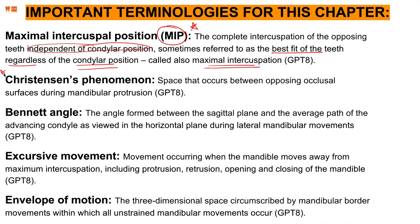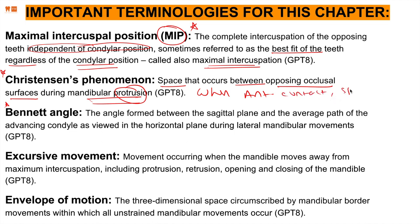Christensen's phenomena — very, very important. Christensen's phenomena is the space that occurs between opposing occlusal surfaces during mandibular protrusion. When the anteriors are protruding and contacting, there is a space created on the posterior teeth. All it means is that when the mandible moves forward and the anteriors contact, there is disocclusion of the posterior teeth — that is Christensen's phenomena.